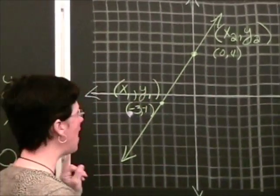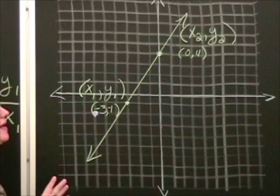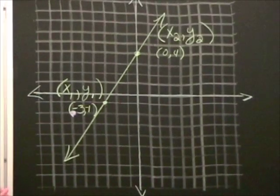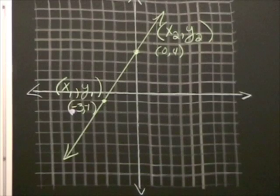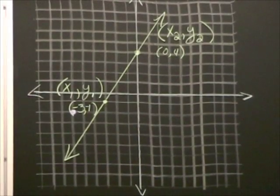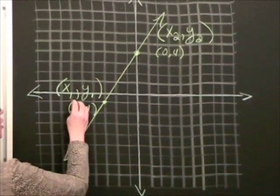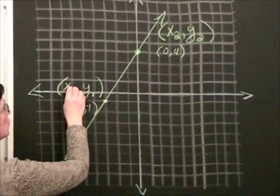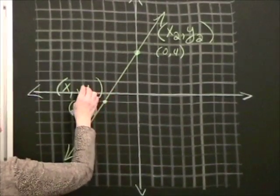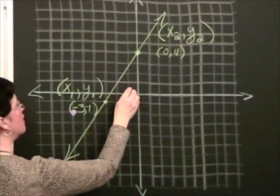Now, from that starting point, we need to apply a slope of 2 fifths. Now remember, slope is rise over run, or your vertical change compared to your horizontal change. So that means from this starting point, we're going to go up 2 and then over to the right 5. 1, 2, 3, 4, 5.